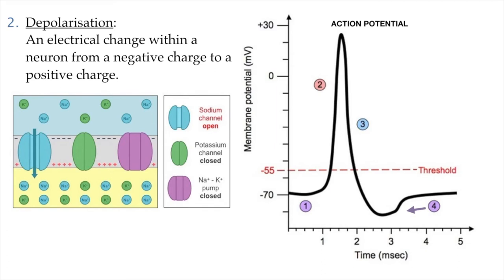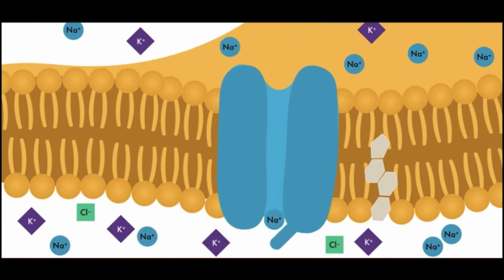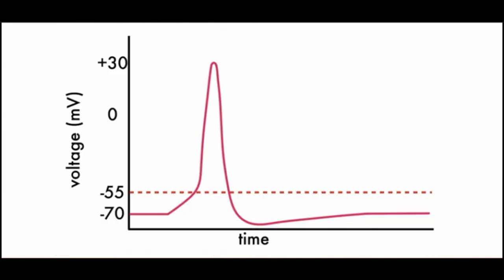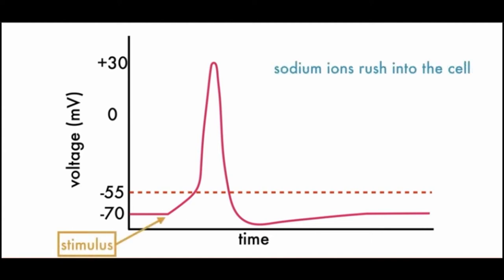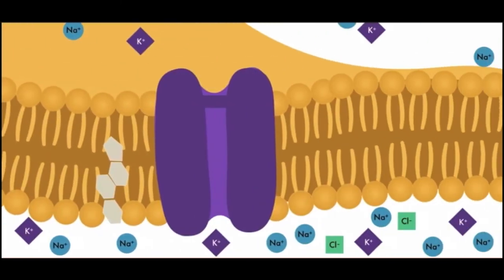When enough sodium channels are stimulated and the threshold of minus 55 millivolts is reached, the remaining voltage-gated sodium channels on the dendrite open. Sodium rushes in and the cell becomes instantly much more positive, reaching a maximum voltage difference of positive 30 millivolts. Once that positive 30 millivolts membrane potential is reached, it triggers the sodium channels to close and initiates stage three. You can see in the diagram that the sodium channels are open, sodium is rushing into the neuron, potassium channels are still closed, and the sodium-potassium pump is closed.